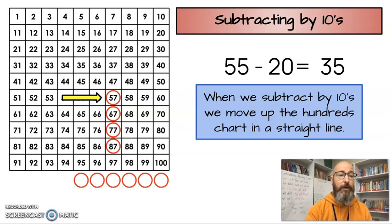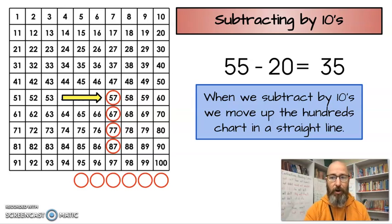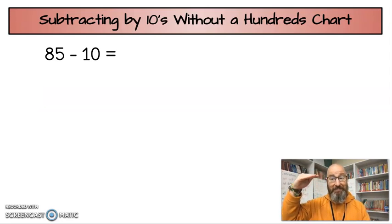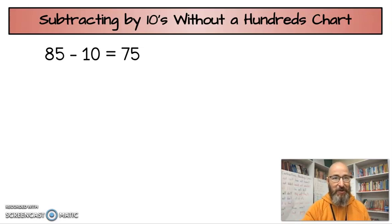Now, I want to do a couple without a 100s chart. Let's think about it in our brains. 85 minus 10. I'm starting easy. 85. One 10. One jump. Did you say 75? You're correct.